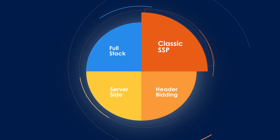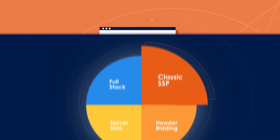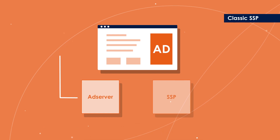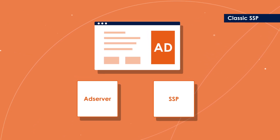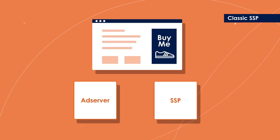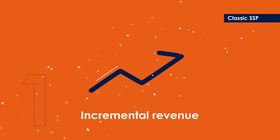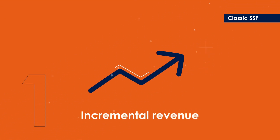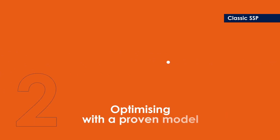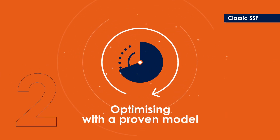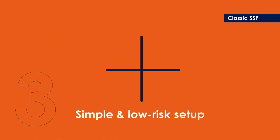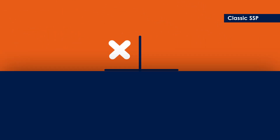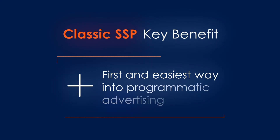First, the classic SSP setup. How does it work? Trading first takes place through an ad server, then through an SSP. This is best if you want incremental revenue on top of directly sold campaigns, or to start optimizing your revenue with a proven model. It's a simple, low-risk setup. The key benefit? It's the first step and the easiest way into programmatic advertising.